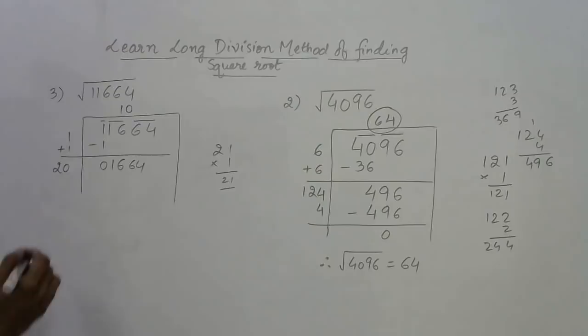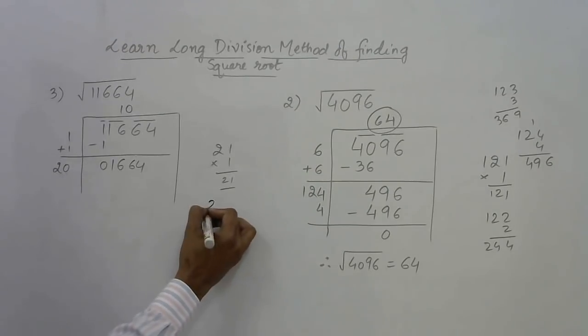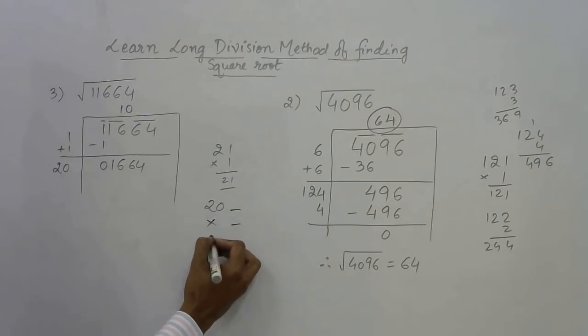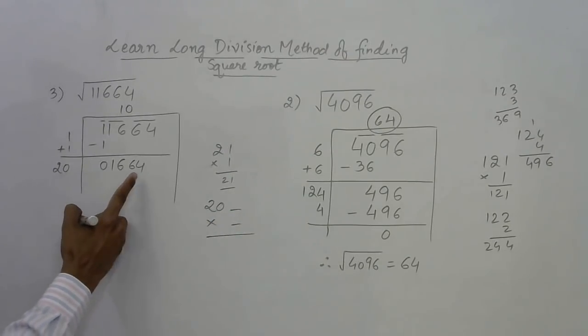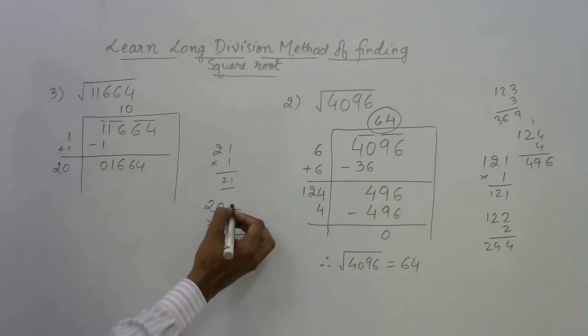Now we have to choose a number here. 20 will become a 3 digit number and we have to multiply it by the same digit to get to 1664. The unit digit here is 4, so either it has to be 2.